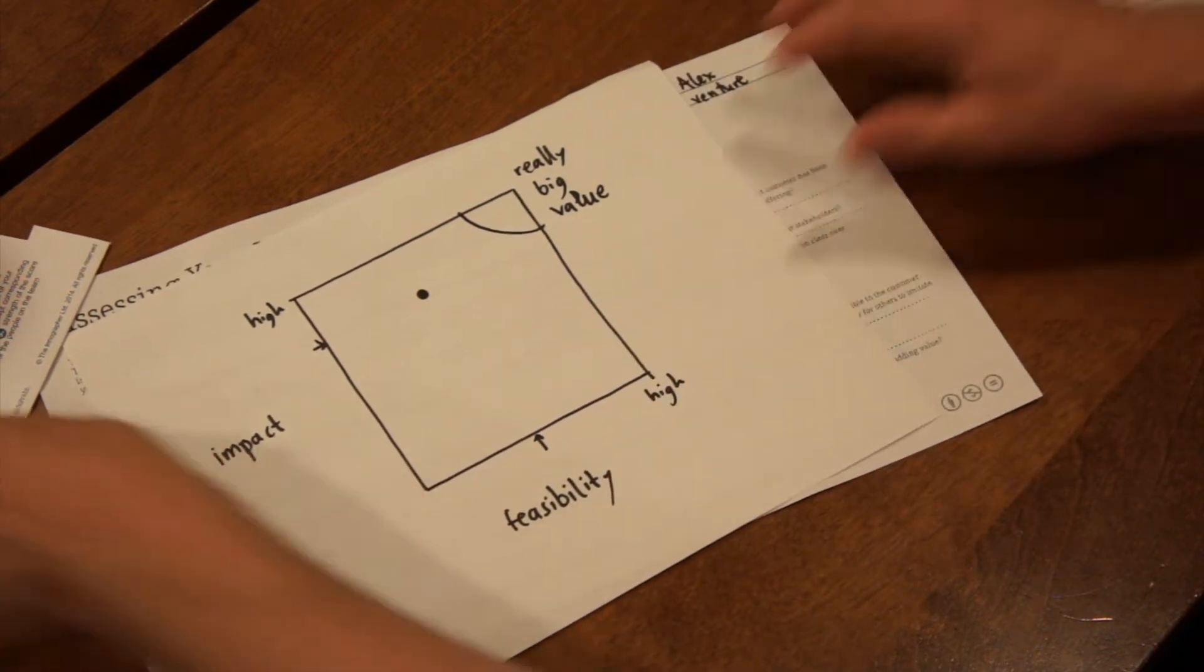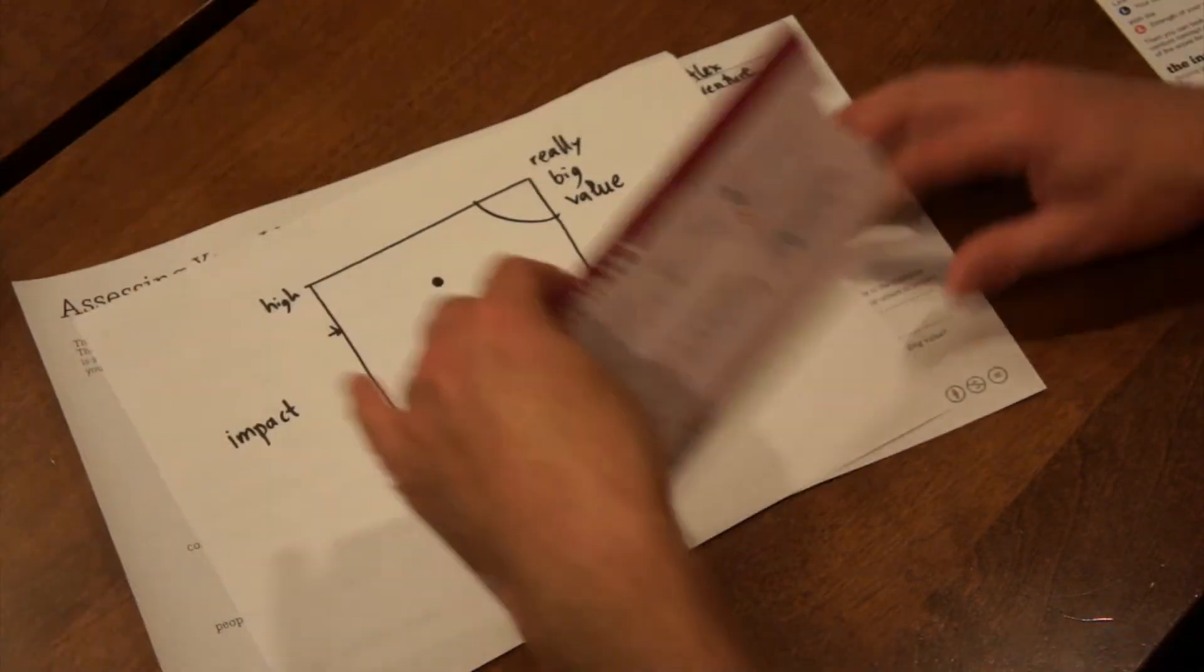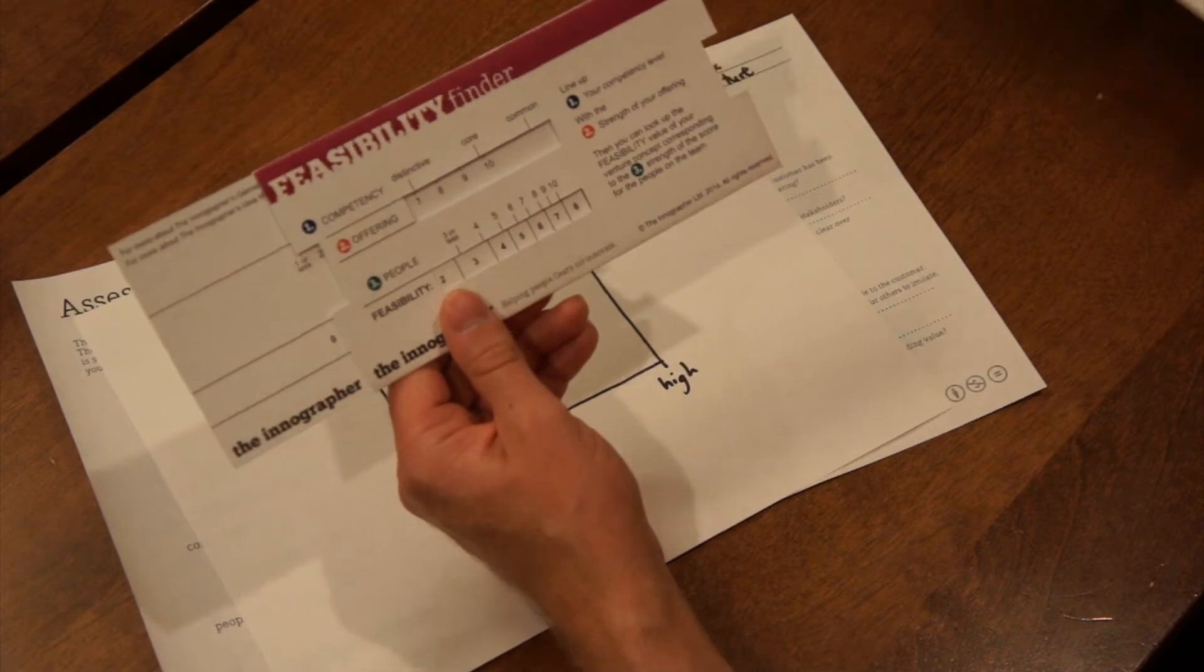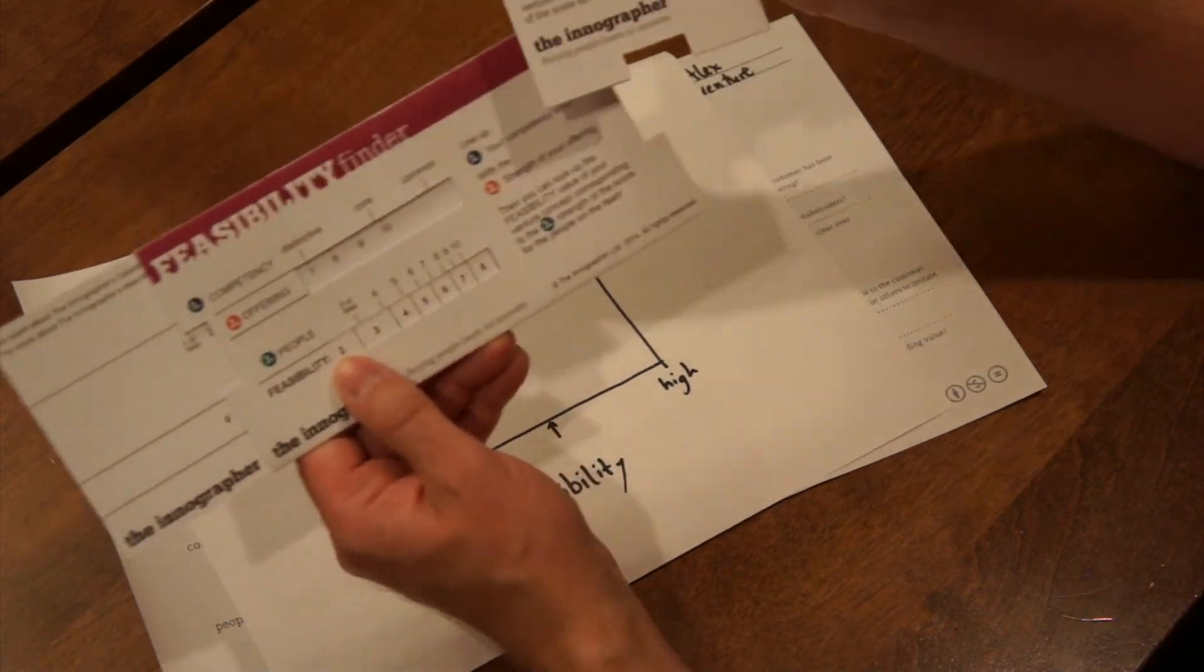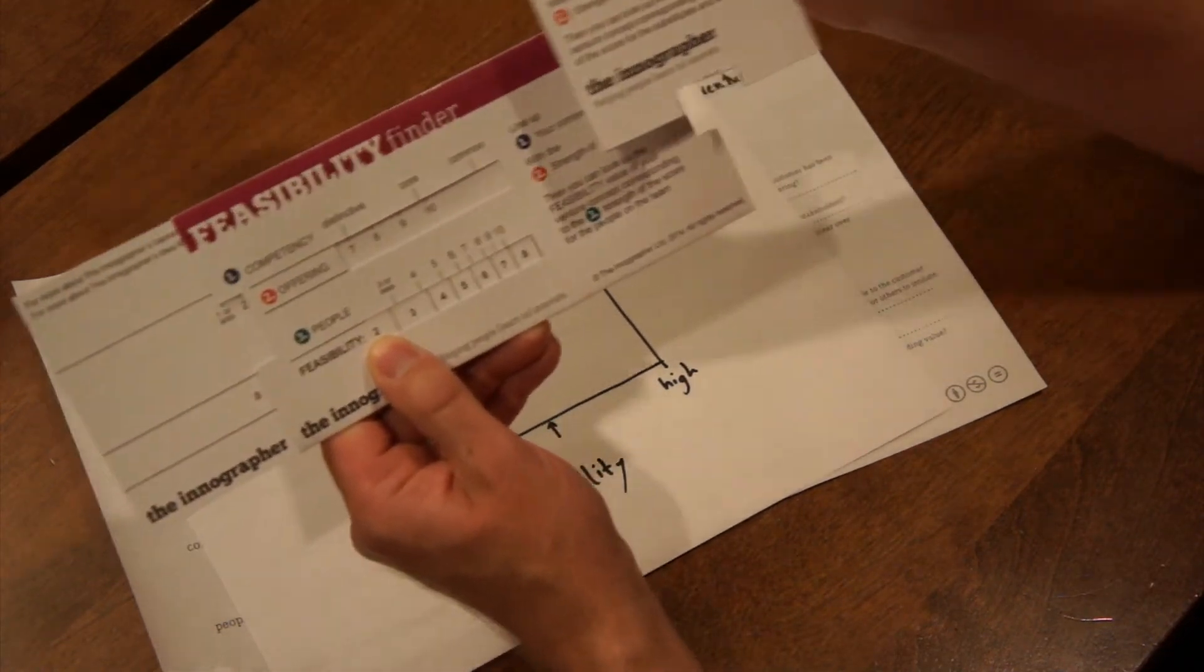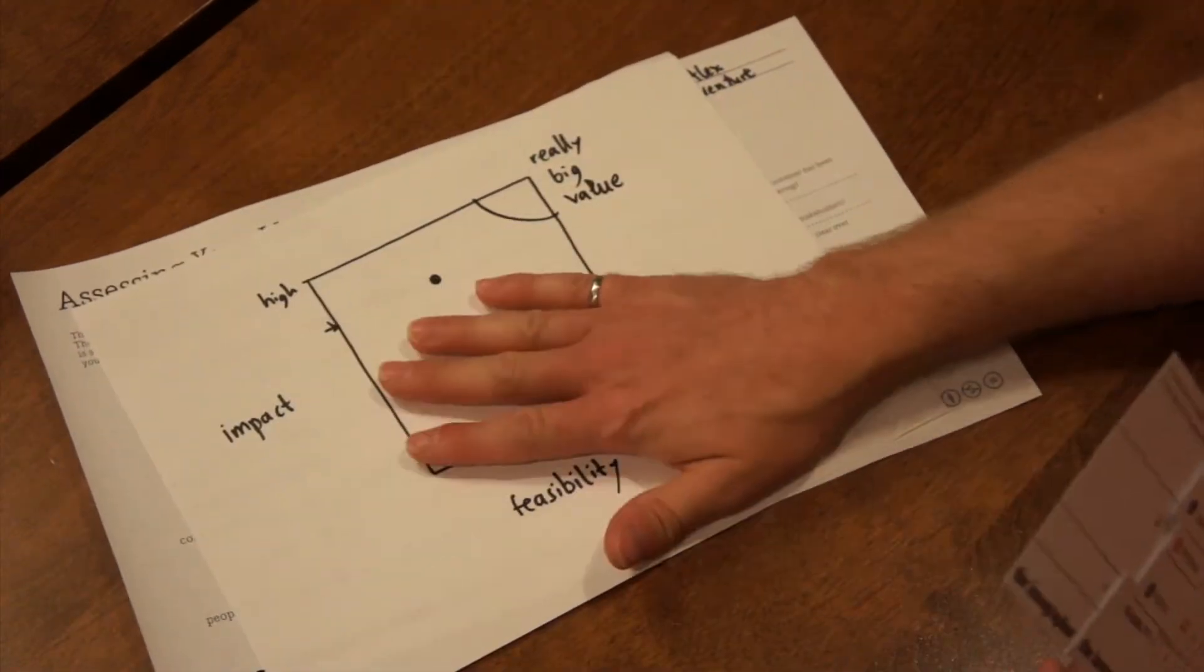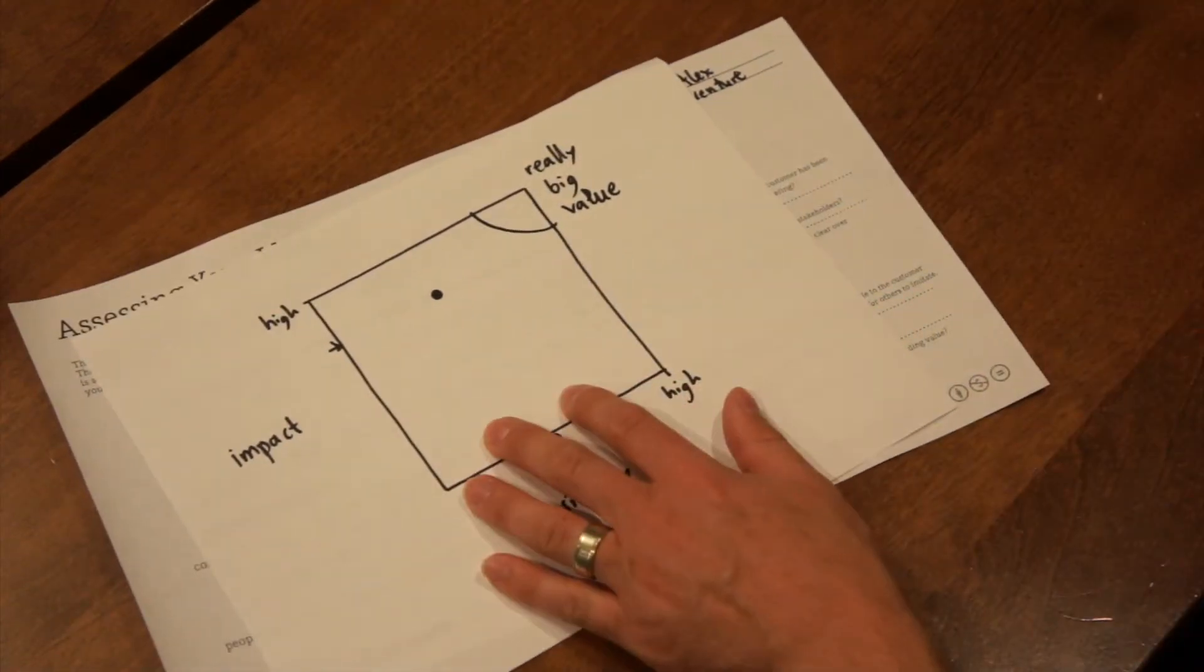Now, this is rough, of course, but it gives them a consistent, tangible tool set to go from the kinds of things that we want them to be thinking about, the variables that they can change to the place that they might hold on the impact and feasibility chart.